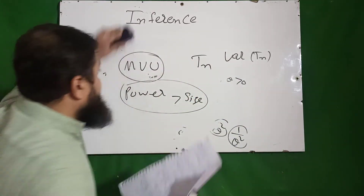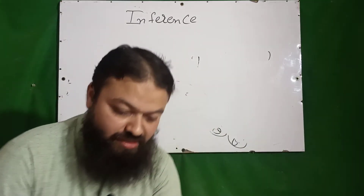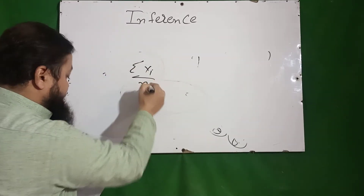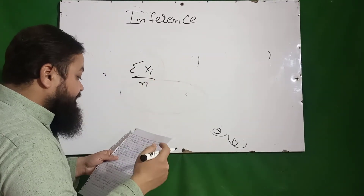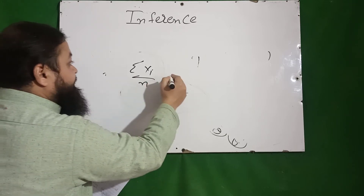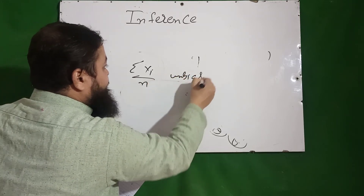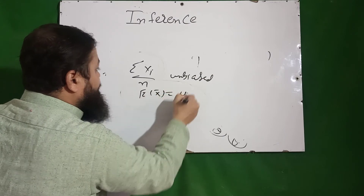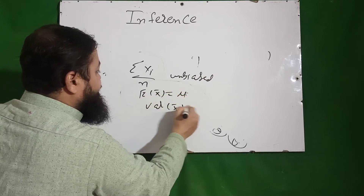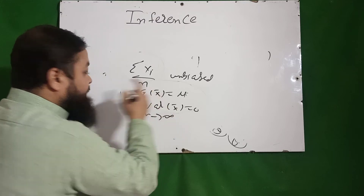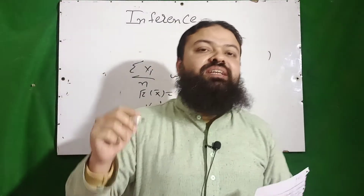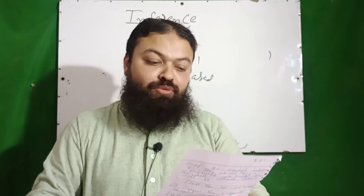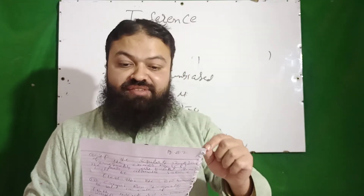Number sixteen: the estimator Σxᵢ/n of the population mean is unbiased and consistent. We know E(x̄) = μ, and Var(x̄) → 0 as n → ∞. Therefore Σxᵢ/n is an unbiased and consistent estimator of the population mean.